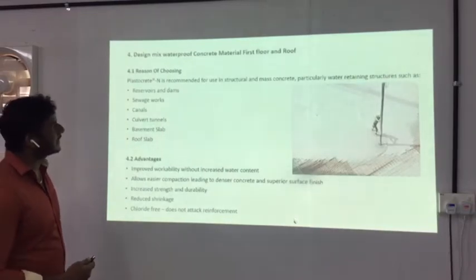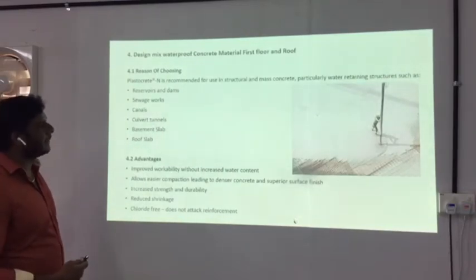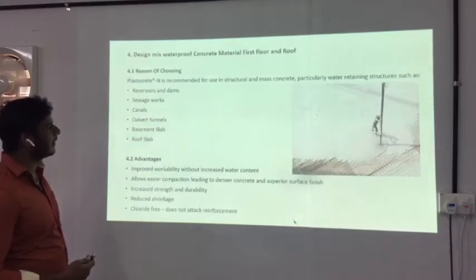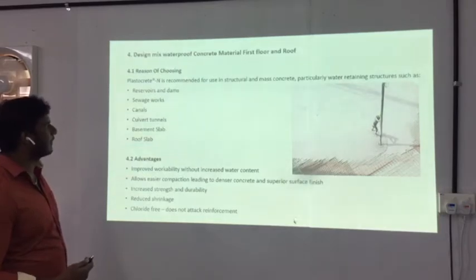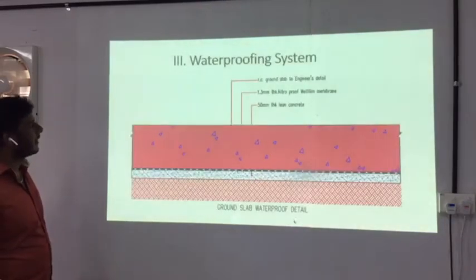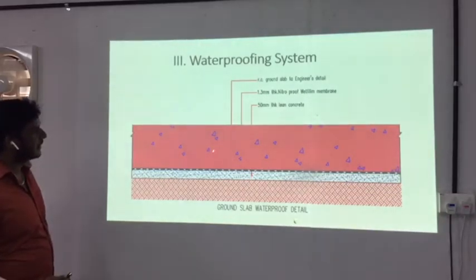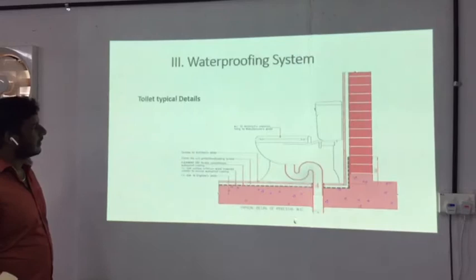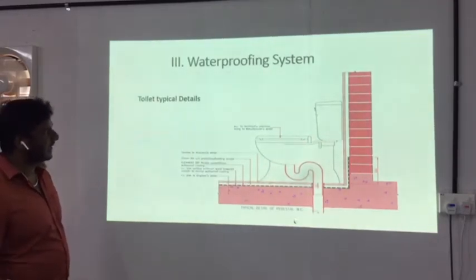Number four is admix plant mixing chemical waterproofing. We mostly use this for the ground floor and the attic slab. We have ground floor waterproofing. These are the advantages. These are the typical details for the ground floor slab — the membrane, 25mm of cement screed, the waterproofing membrane, and the concrete.